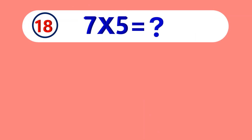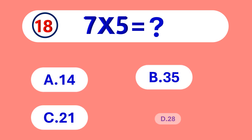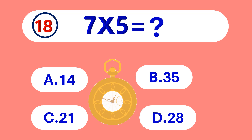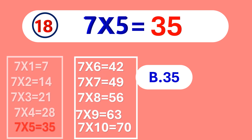7 times 5 is equal to... 35. 7 times 5 is 35.